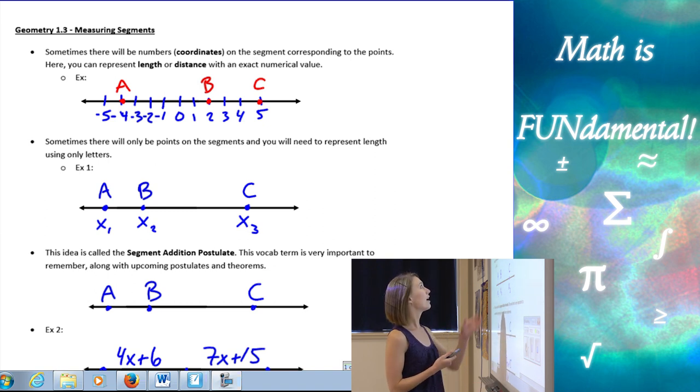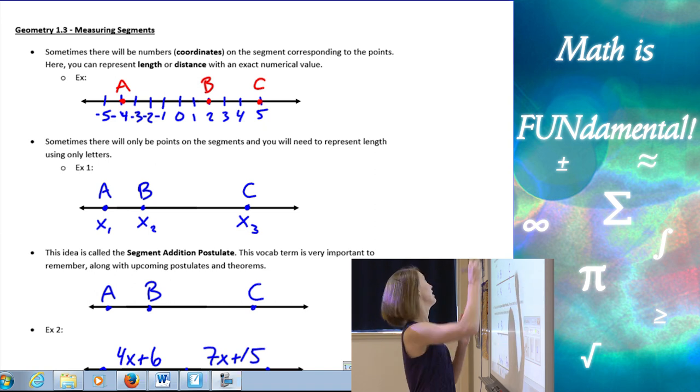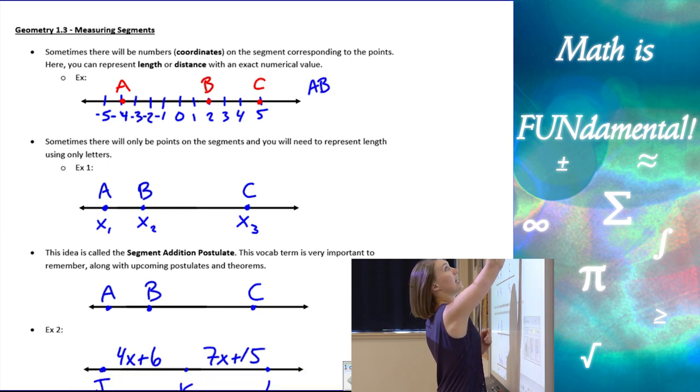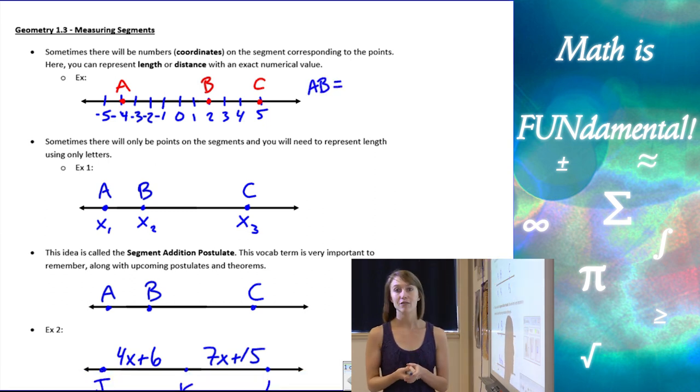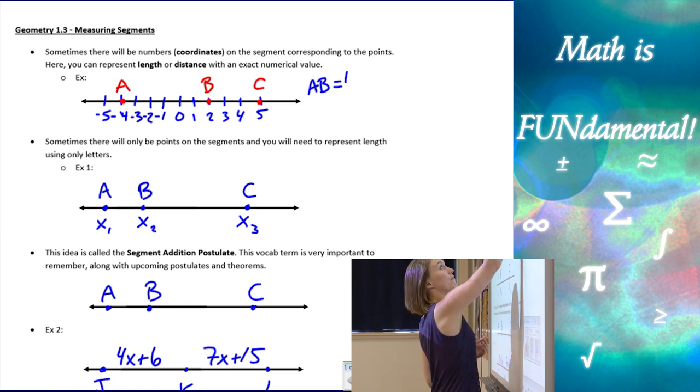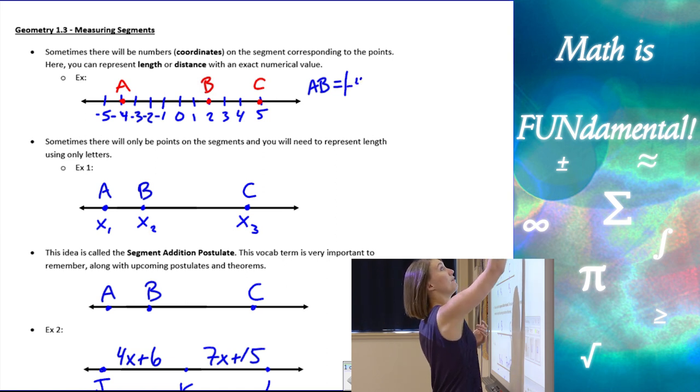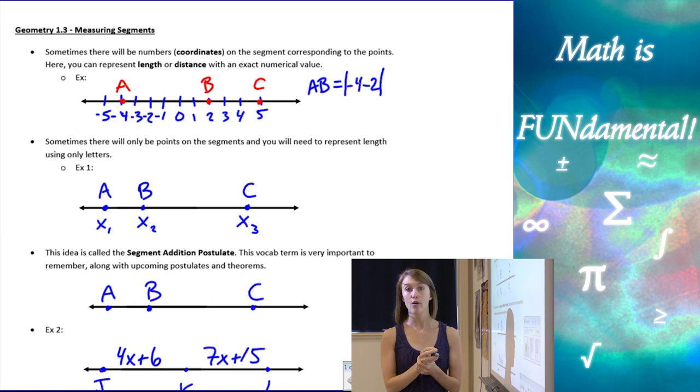So for example here we have A, the point A, the coordinate is negative 4, B is at 2, and C is at 5. If I wanted the length of the segment AB, I can find the distance between the two coordinates. So to find the distance we want to take the absolute value of the difference of the two coordinates. So here I have negative 4 minus 2.